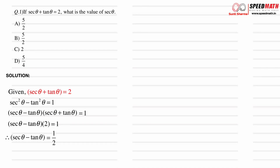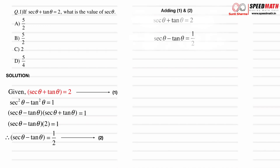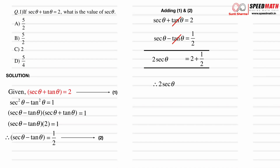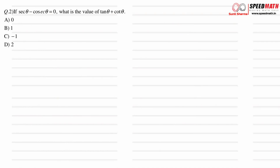So sec θ minus tan θ equals 1/2. We now have two unknowns, so we solve like a linear system. Equation 1: sec θ plus tan θ equals 2. Equation 2: sec θ minus tan θ equals 1/2. Adding equations 1 and 2, tan θ cancels, giving 2 sec θ equals 2 plus 1/2, which is 5/2. Dividing by 2, sec θ equals 5/4. So the correct option is C.